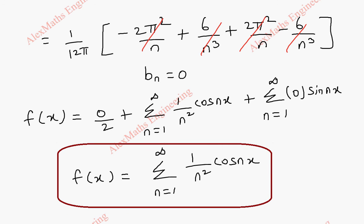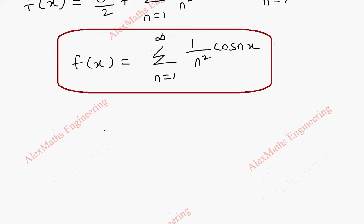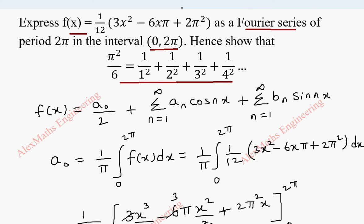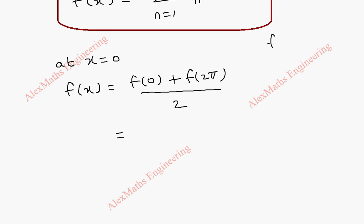Now coming to the second part, we have to prove this expression. For that I take x equal to 0. Since it is an extreme value we have to use the average: f of 0 plus f of 2 pi, all divided by 2. Our f of x is 1 by 12 times 3x squared minus 6x pi plus 2 pi squared.